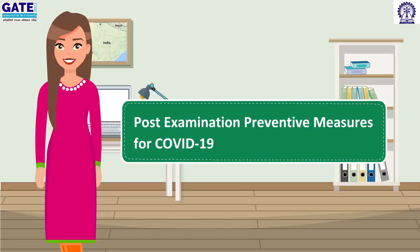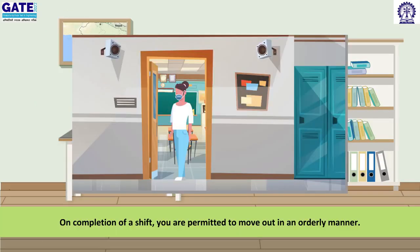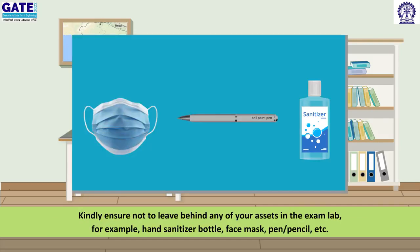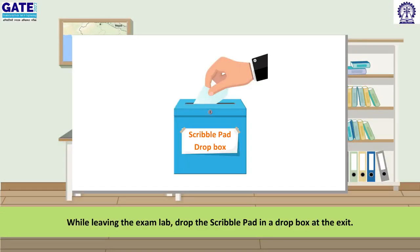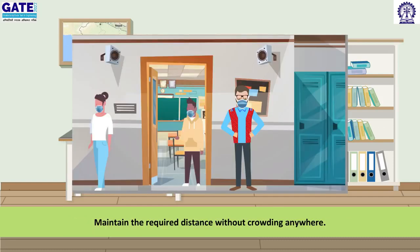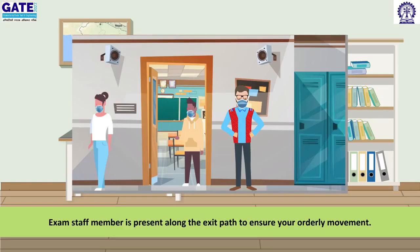Post-examination preventive measures for COVID-19: on completion of a shift, you are permitted to move out in an orderly manner. You can leave the exam lab only after the exam staff member permits you to leave. Kindly ensure not to leave behind any of your assets in the exam lab, such as hand sanitizer bottle, face mask, pen or pencil, etc. While leaving the exam lab, drop the scribble pad in a drop box at the exit. Maintain the required distance without crowding anywhere. Exam staff members are present along the exit path to ensure orderly movement.